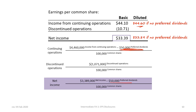We would not be deducting the $50,000 in preferred dividends, so we'd be left with $3,389,000 in net income divided by 100,000 common shares. Of course, the discontinued operations would still have a $10.71 deduction.